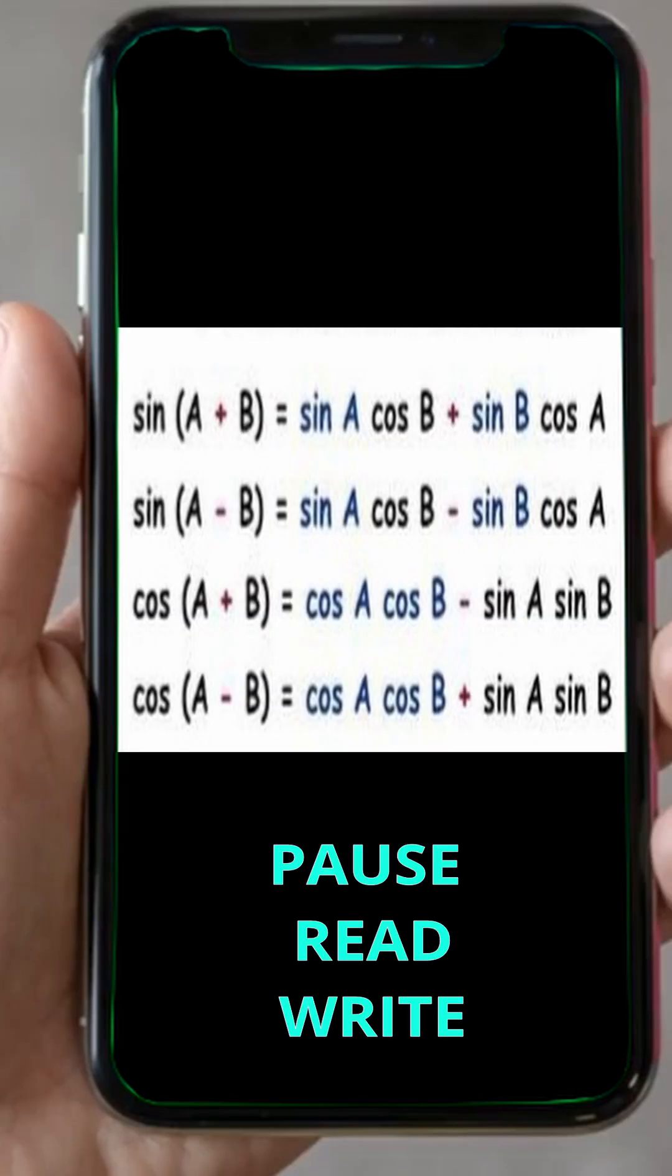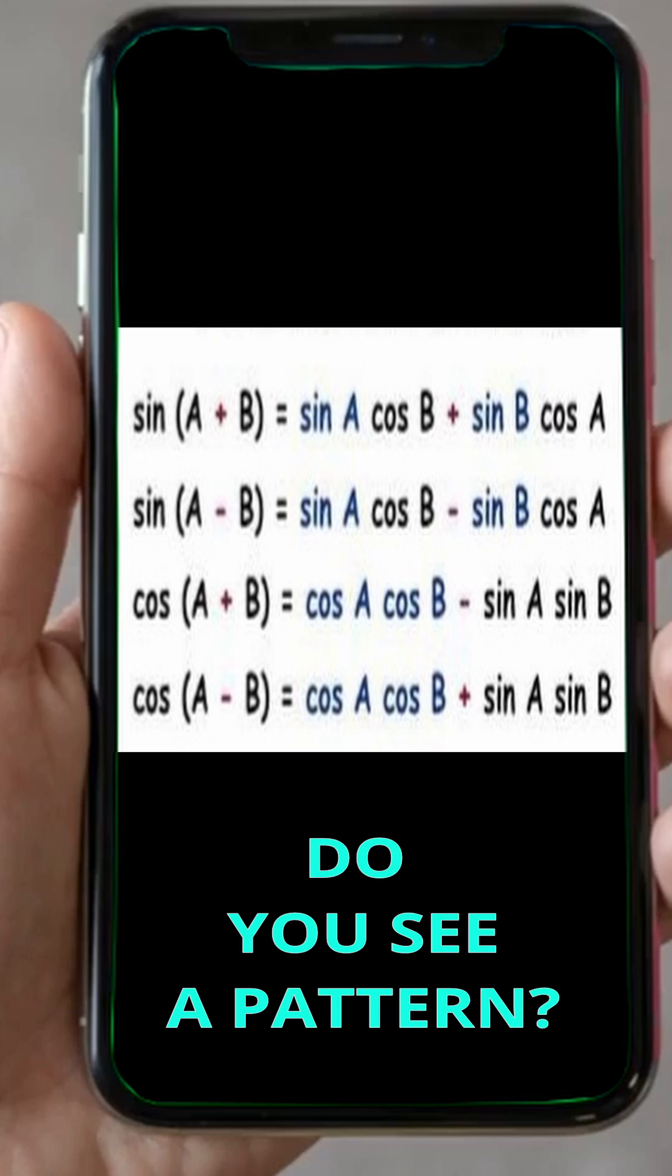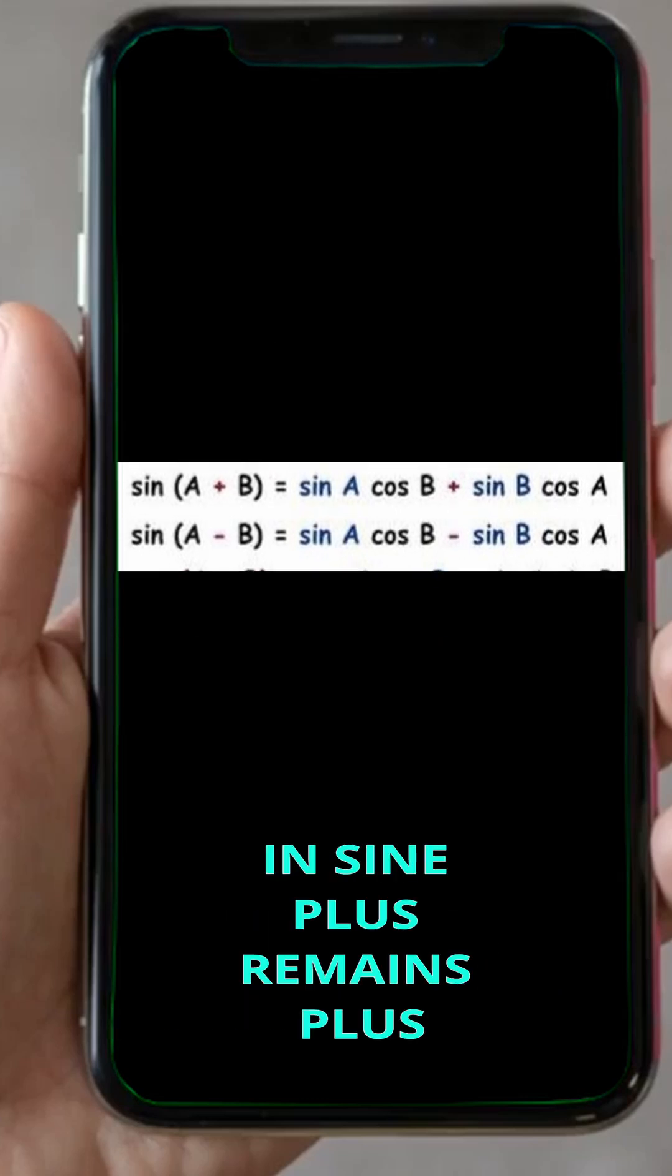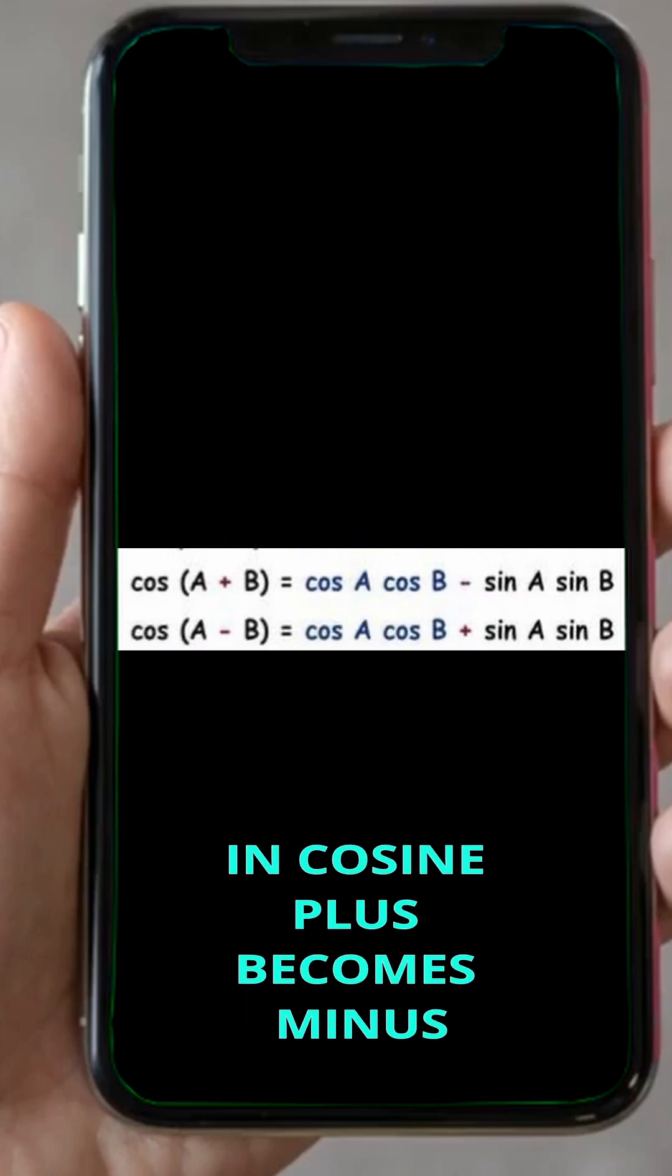Firstly, pause, read and write this formula on blank paper. You see a pattern. In sine plus remains plus, and in cosine plus becomes minus.